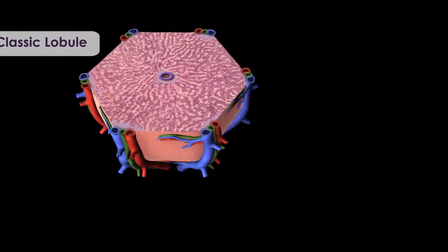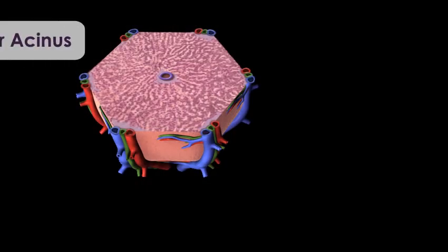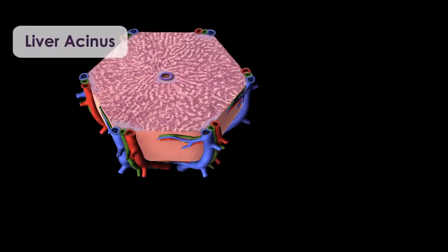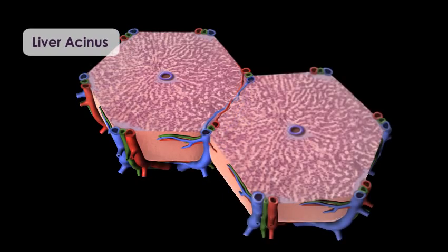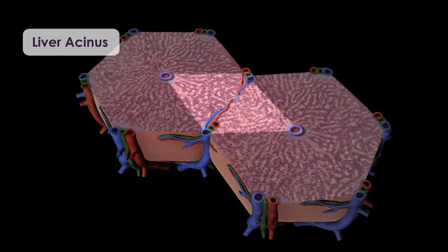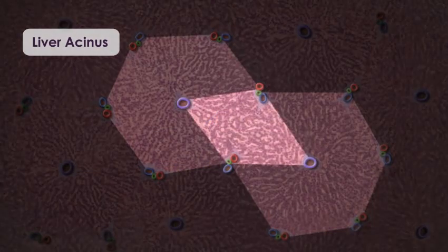The liver acinus is another way to view liver structure. This model is important for understanding liver physiology and pathology. The structure of the acinus overlaps two classic liver lobules. The acinus is diamond or oval shaped and involves approximately two portal triads and two central veins.